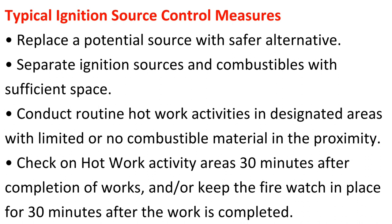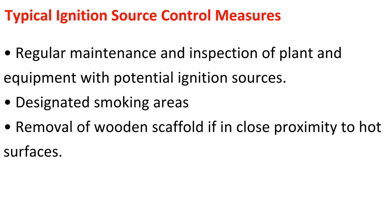Typical ignition source control measures include: replace a potential source with a safer alternative; separate ignition sources and combustibles with sufficient space; conduct routine hot work activities in designated areas with limited or no combustible material in the proximity; check on hot work activity areas 30 minutes after completion of works, and/or keep the fire watch in place for 30 minutes after the work is completed; regular maintenance and inspection of plant and equipment with potential ignition sources; designated smoking areas; and removal of wooden scaffold if in close proximity to hot surfaces.